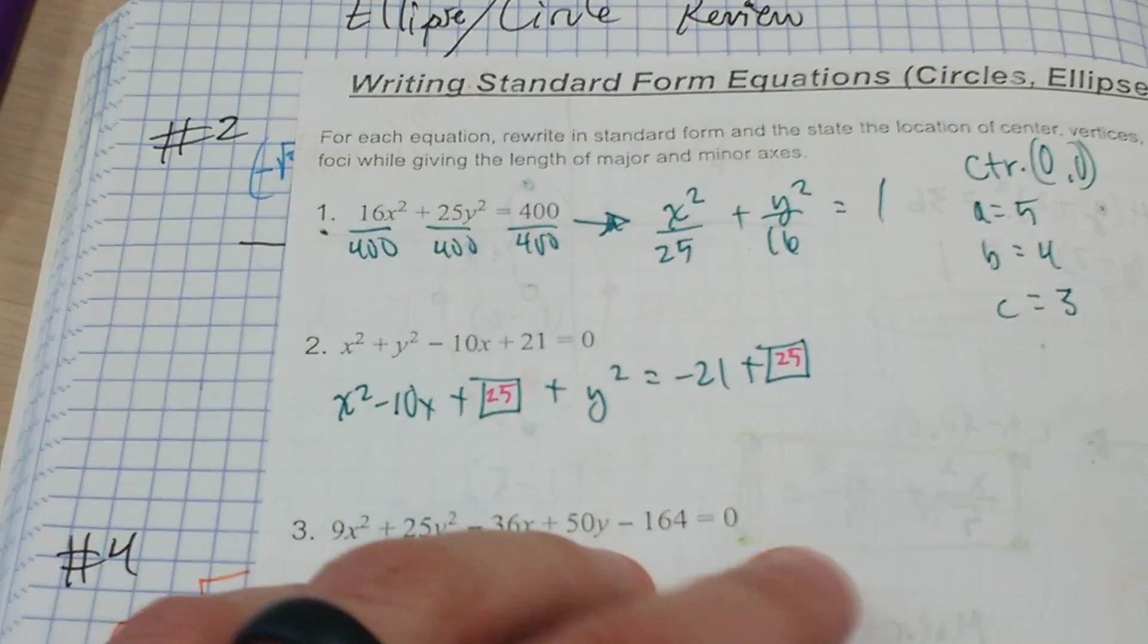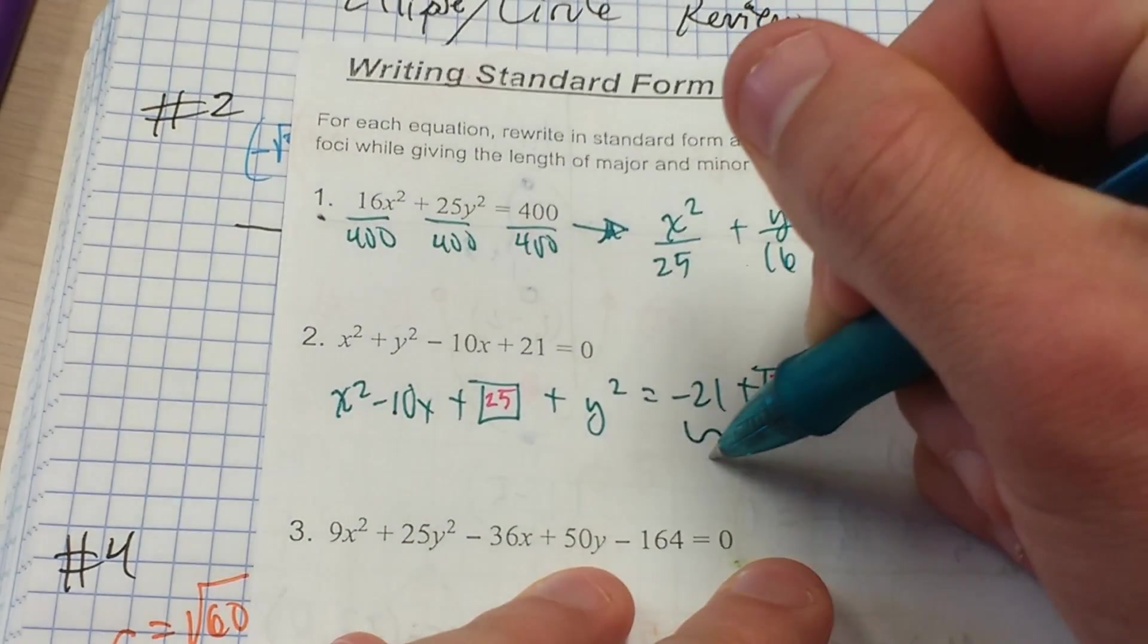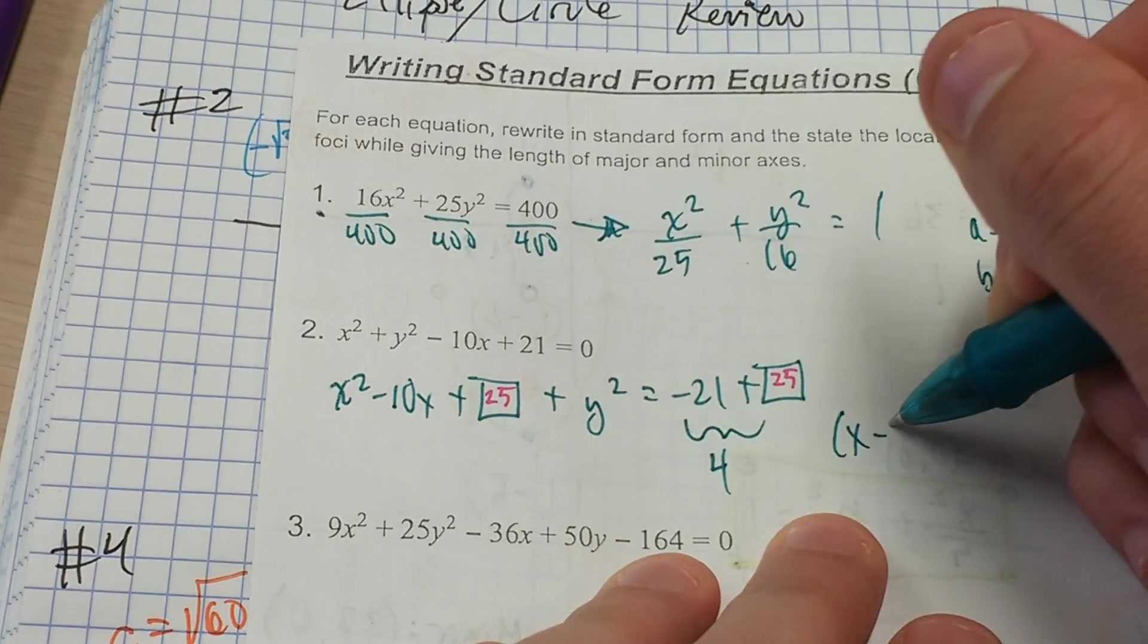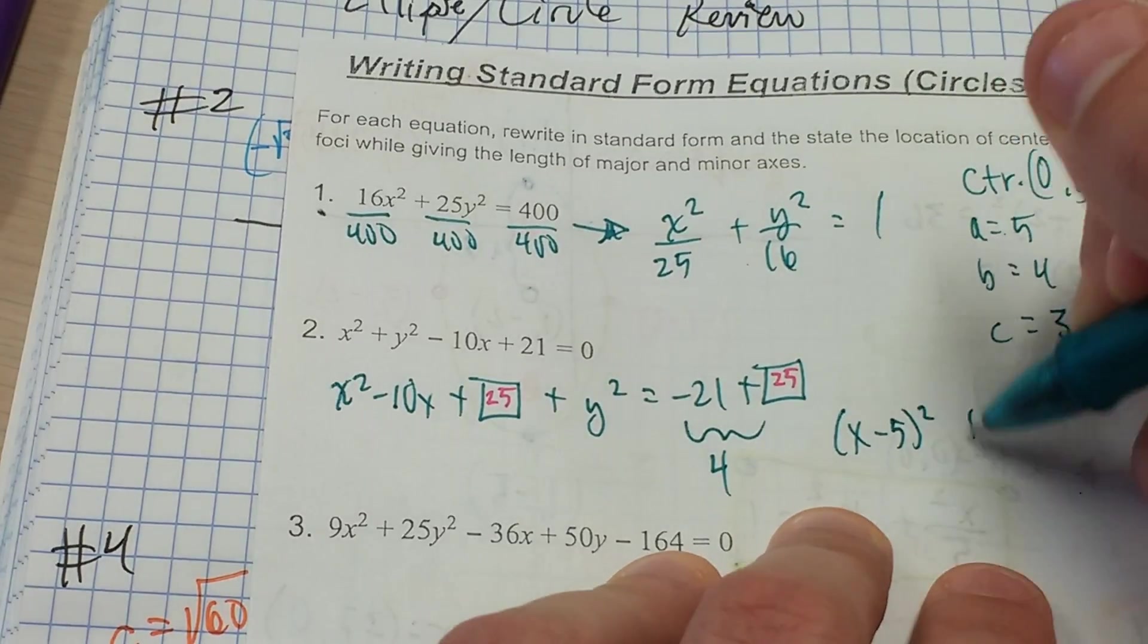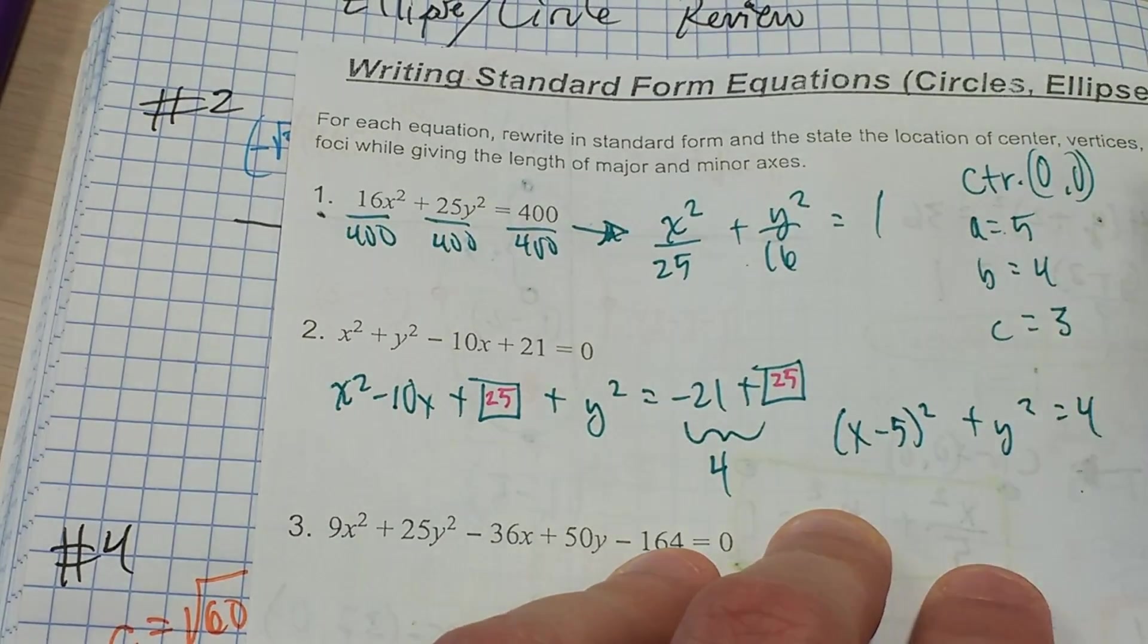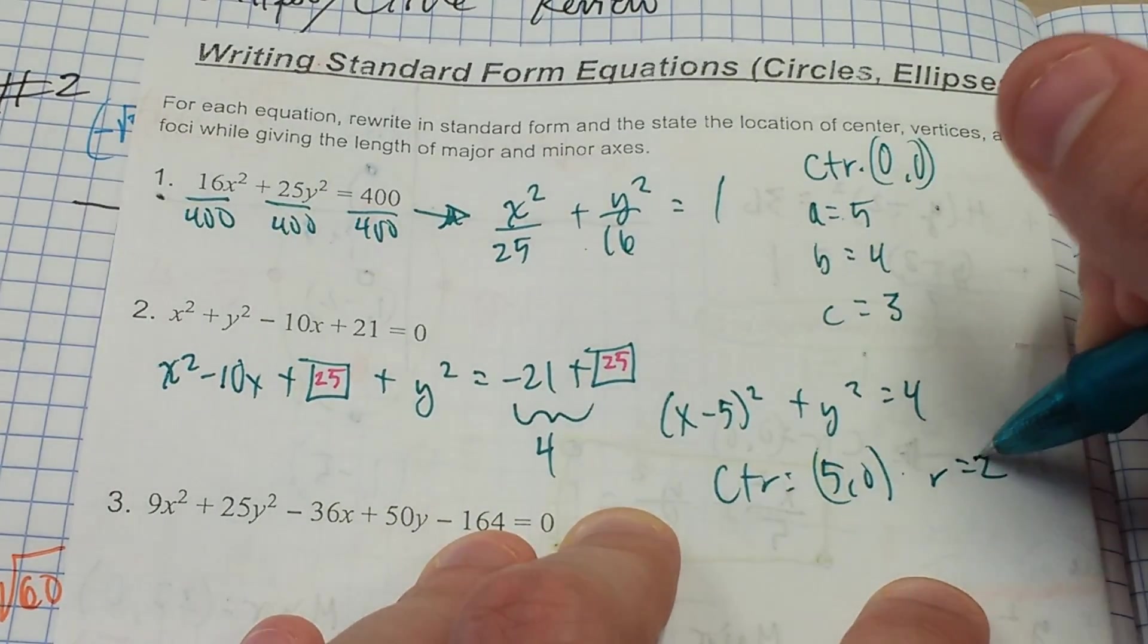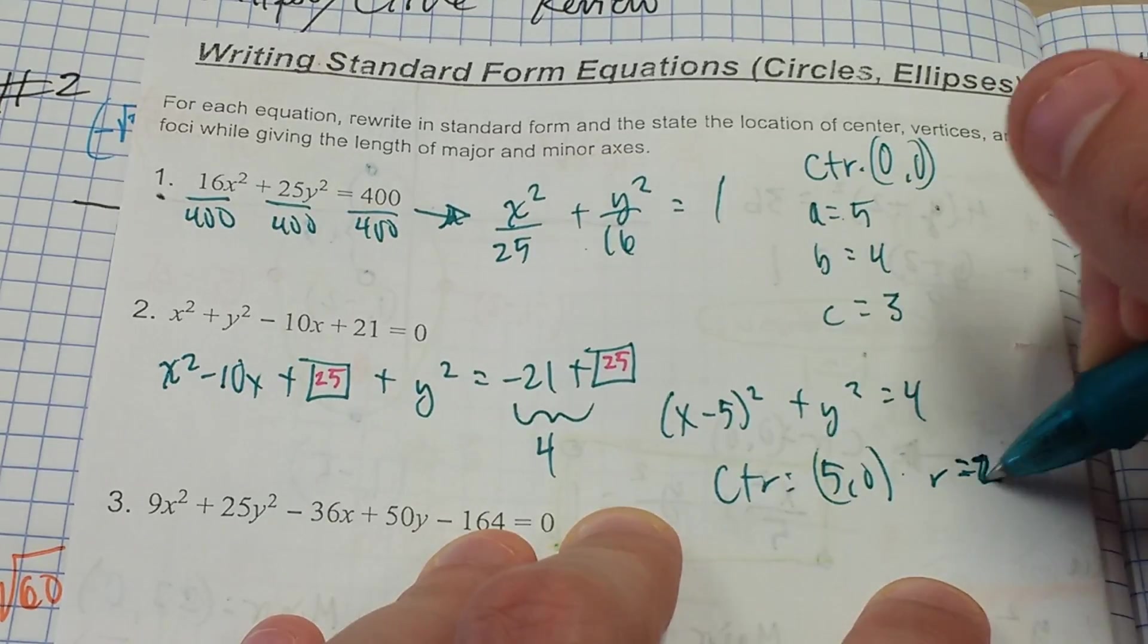So here we're going to get that the radius squared is 4, thus the radius is 2. So our standard form equation is x minus 5 squared plus y squared equals 4. We have a center at 5, 0, and a radius of 2. Now, realizing the instructions ask for major and minor axes and foci, but circles don't have those. So we don't have to worry about that here.